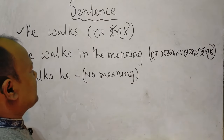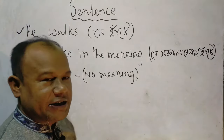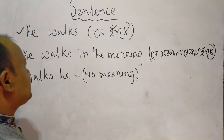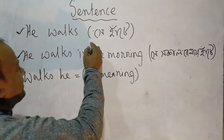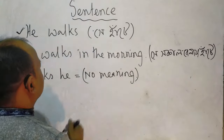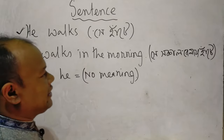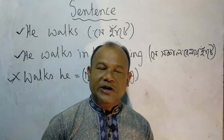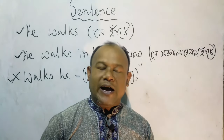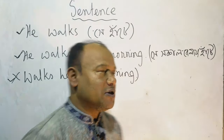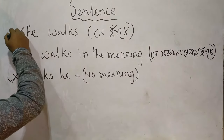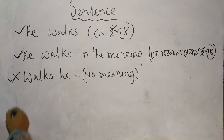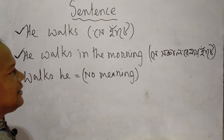'He walks.' 'He walks' — it has a meaning. 'He walks in the morning' — it also has a meaning. So we can say it is a sentence and it is also a sentence.